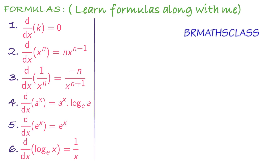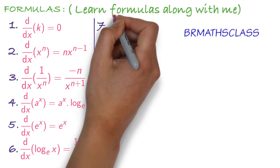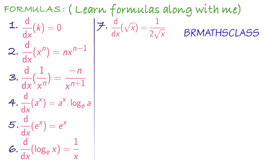Seventh formula: d by dx of root x equals 1 divided by 2 root x. Derivative of root x equals 1 divided by 2 root x. Actually, this is not a formula, but we use derivative of root x very frequently, that's why I am taking this as a formula. This can be derived easily from the formula d by dx of x power n equals n into x power n minus 1.